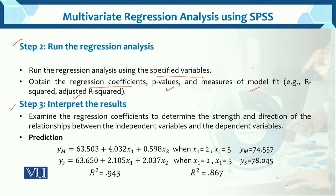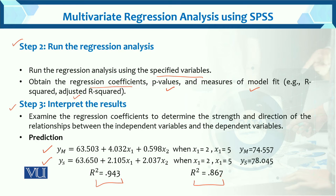Here is the model. The math model (Y_M) is: 63.503 + 4.032×x1 + 0.593×x2, where x1 is study hours and x2 is extracurricular activities. This is the model for the math dependent variable. And here is the model for science. These are the regression equations generated from the SPSS output.